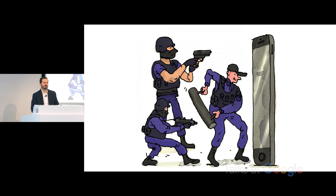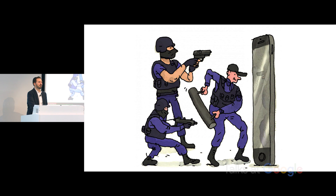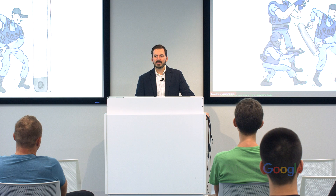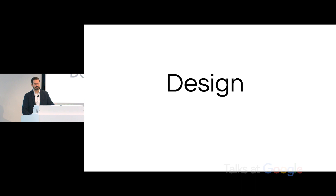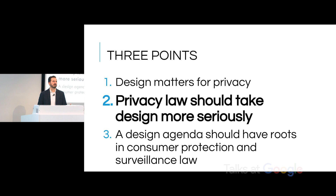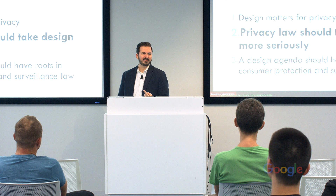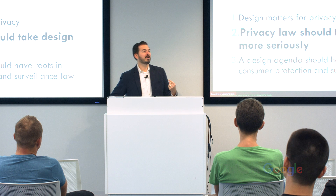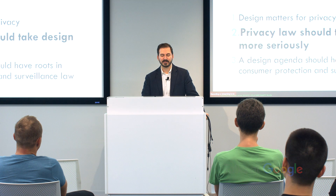The third story is the dispute between the FBI and Apple over whether to build in some sort of bypass to its encryption scheme and authentication protocol to allow access to the phone of the San Bernardino shooter. Now, what do these three things have in common? They all are stories about the design of information technologies. In the book, I focus on how things are built and the way in which they affect our privacy.